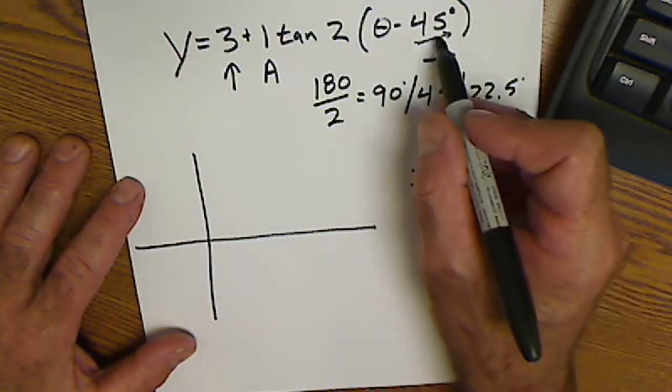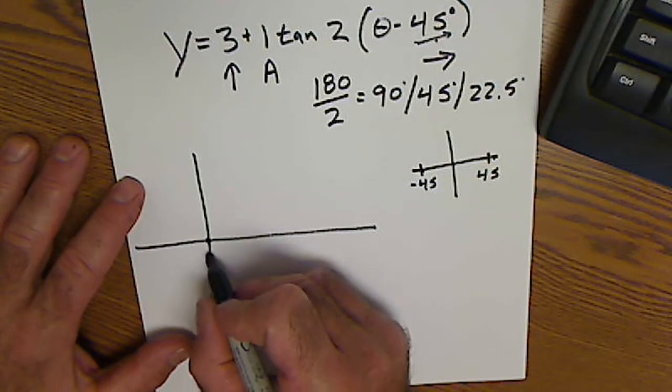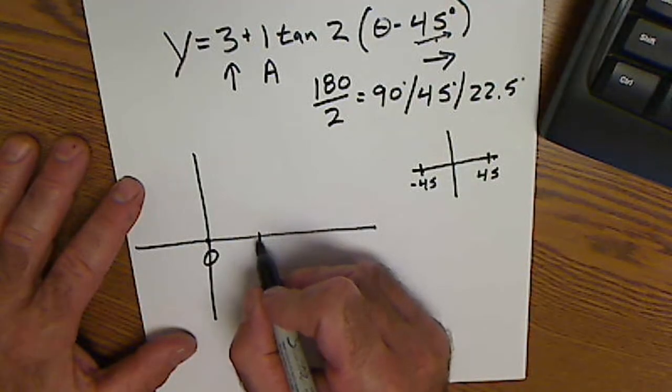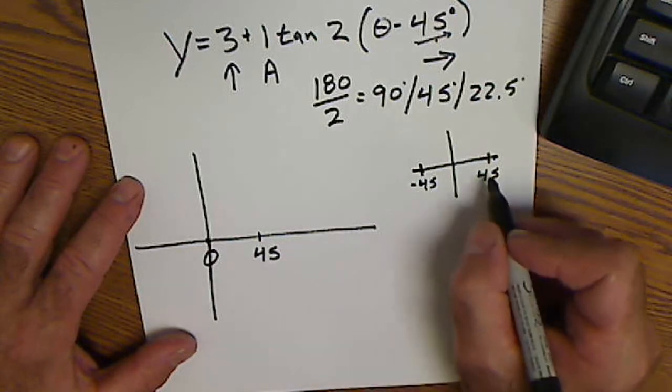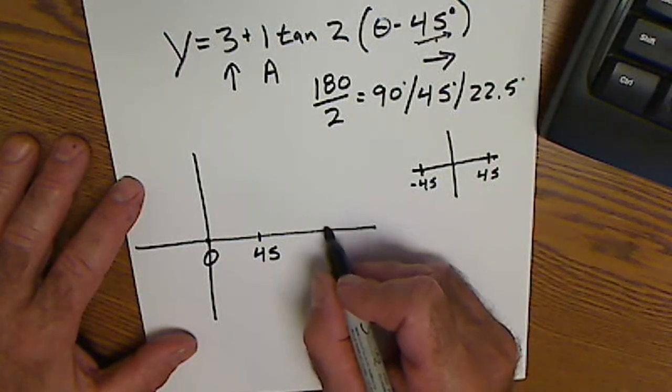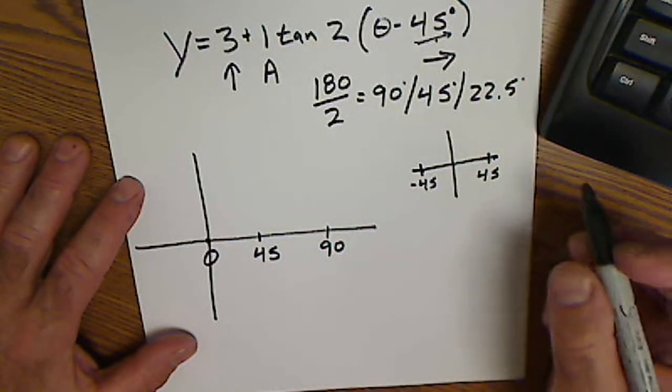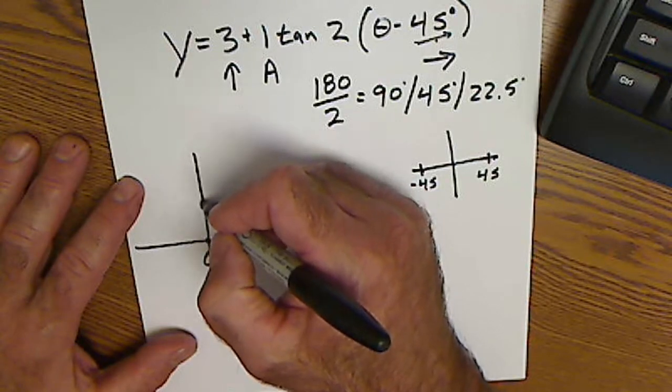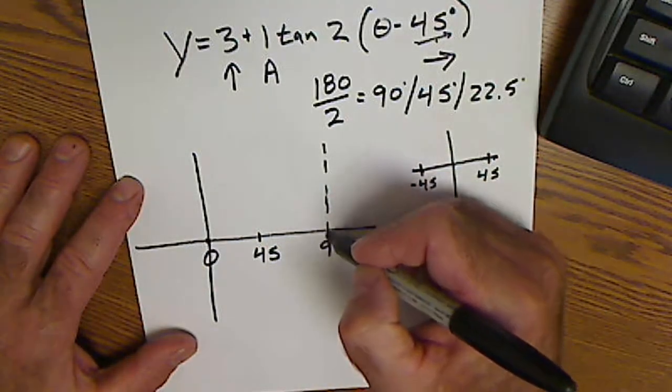Negative 45 plus 45 is 0. 0 plus 45 is 45. 45 plus 45 is 90. That's my x-axis.